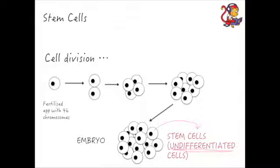Soon after this stage, as the cell divisions occur, you'll get a process that switches on the cell and it will suddenly become differentiated. It will become a muscle cell or a blood cell or a rod cell in your eye or whatever it is. It will be told what it is going to become and you can't go back from that process. Once it has been determined what that cell is going to be, there is no going back. So this undifferentiated stage is really useful.